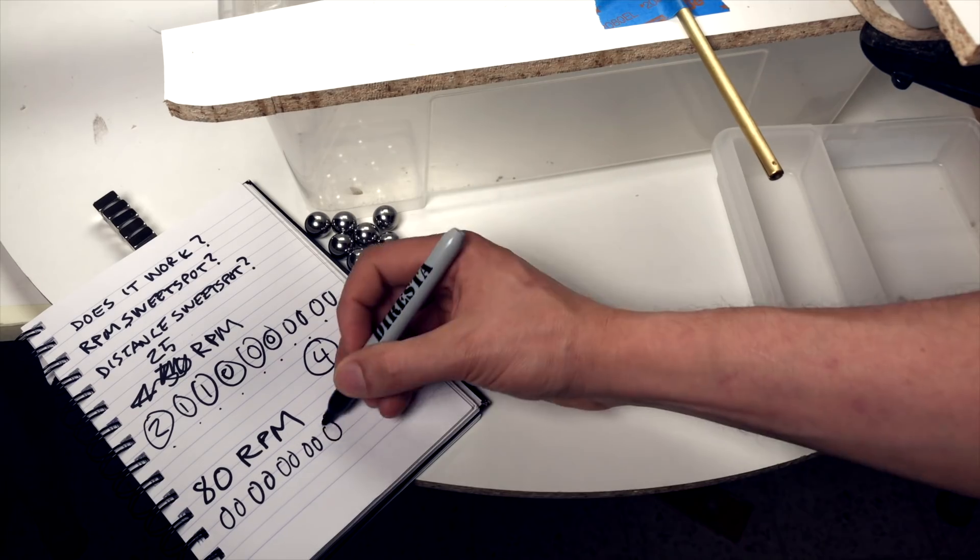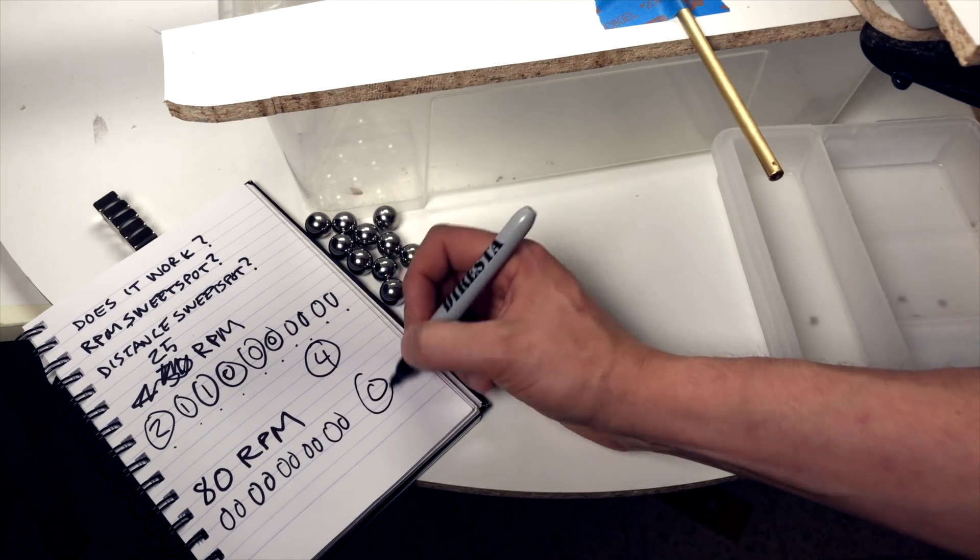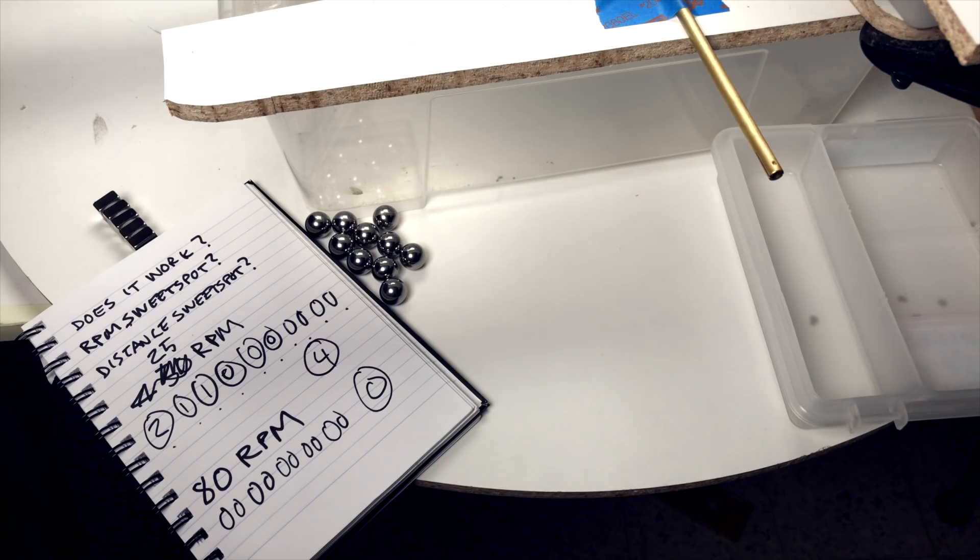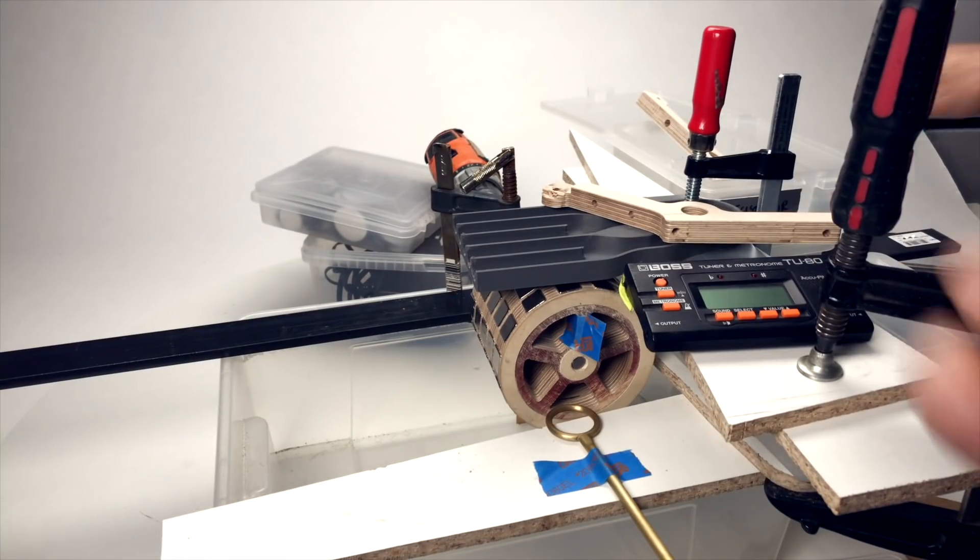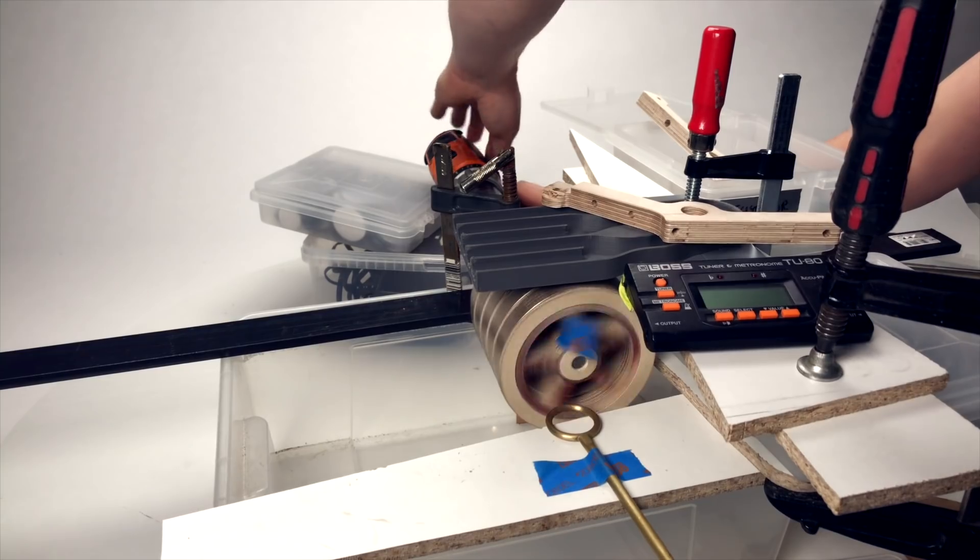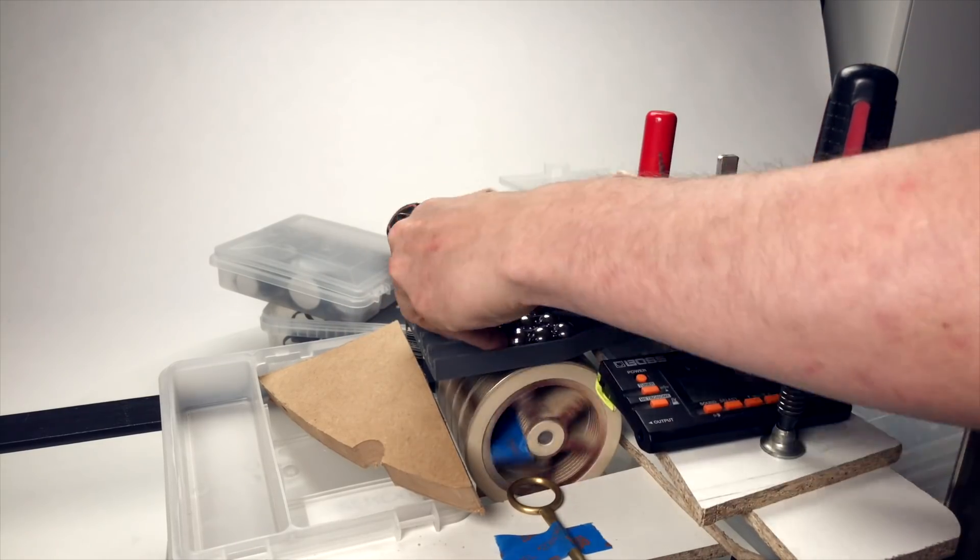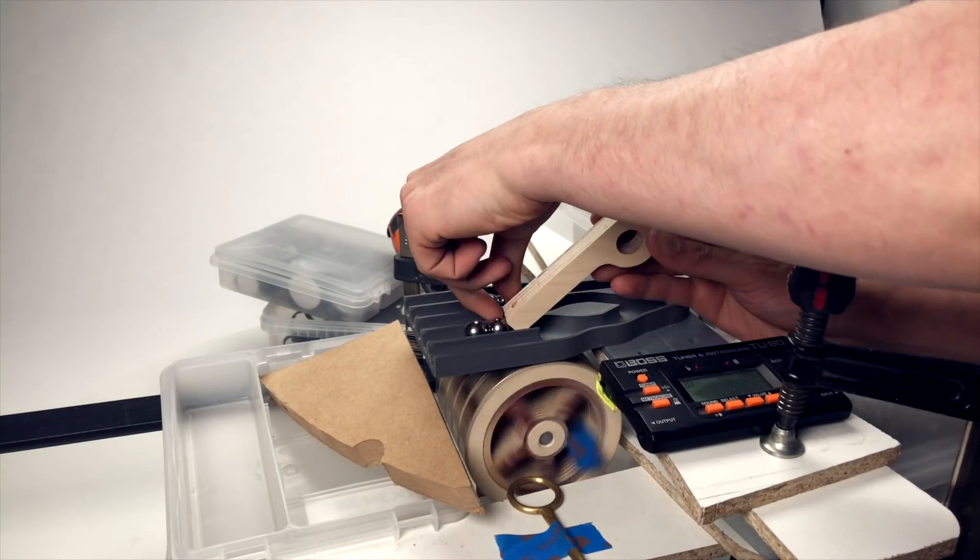Oh, that's nice. 80 RPM had a zero point, meaning perfect demagnetization. We're going to do an extreme speed, which I think is going to be worse.